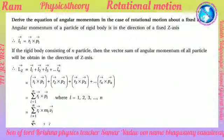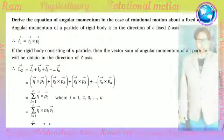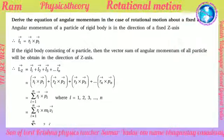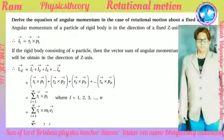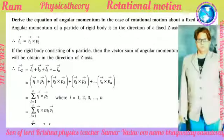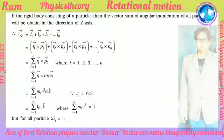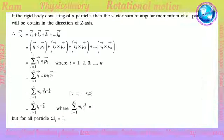Angular momentum in the case of rotational motion about a fixed axis: angular momentum of a particle of a rigid body is in the direction of the fixed z-axis. L1 = r1 × p1. If the rigid body consists of n particles, the vector sum of angular momenta of all particles in the direction of the z-axis is Lz = L1 + L2 + ... + Ln = summation of (ri × pi), where i = 1, 2, 3... n.